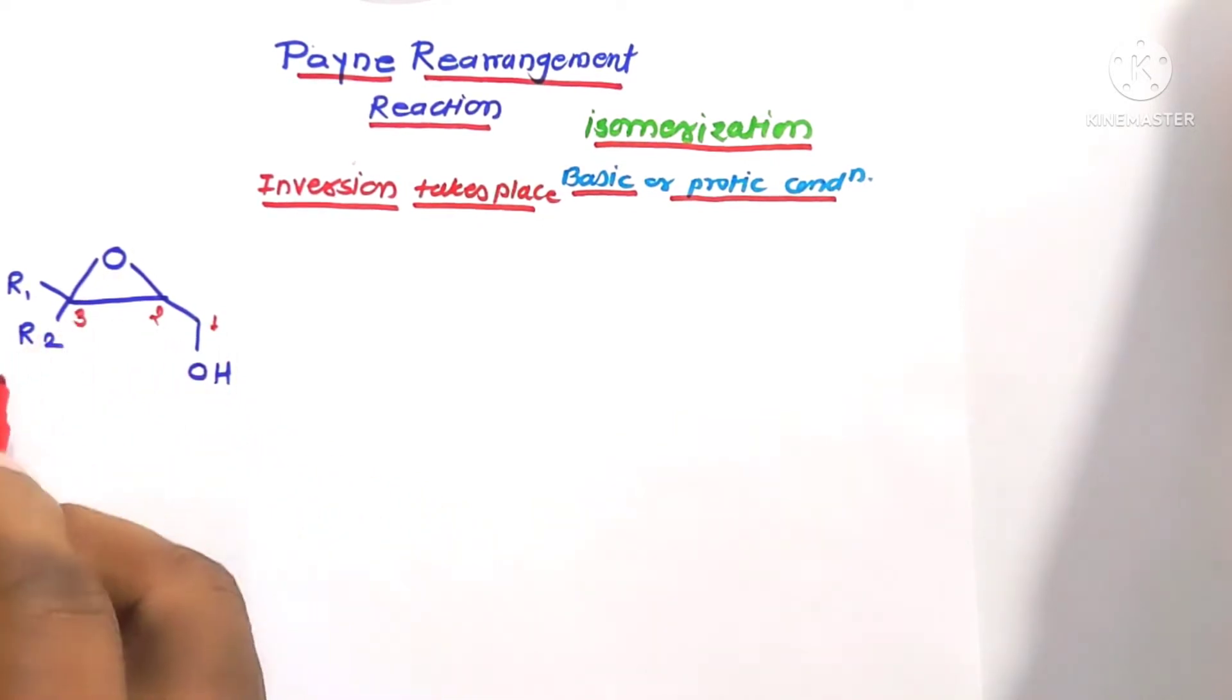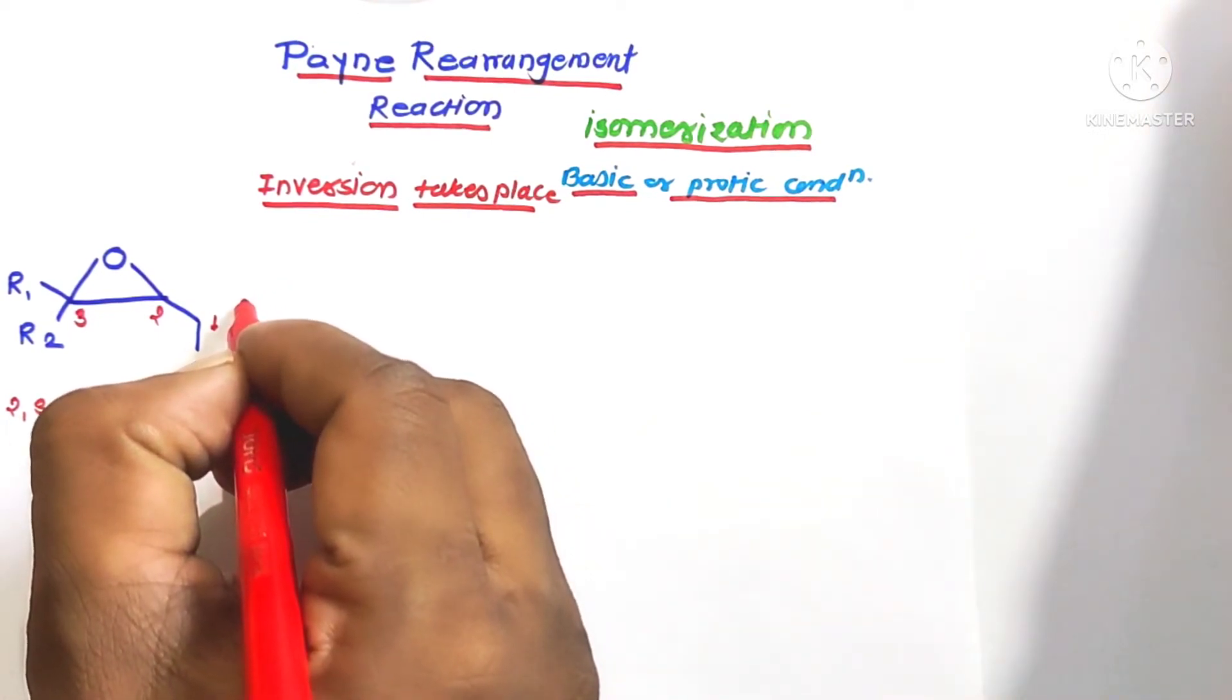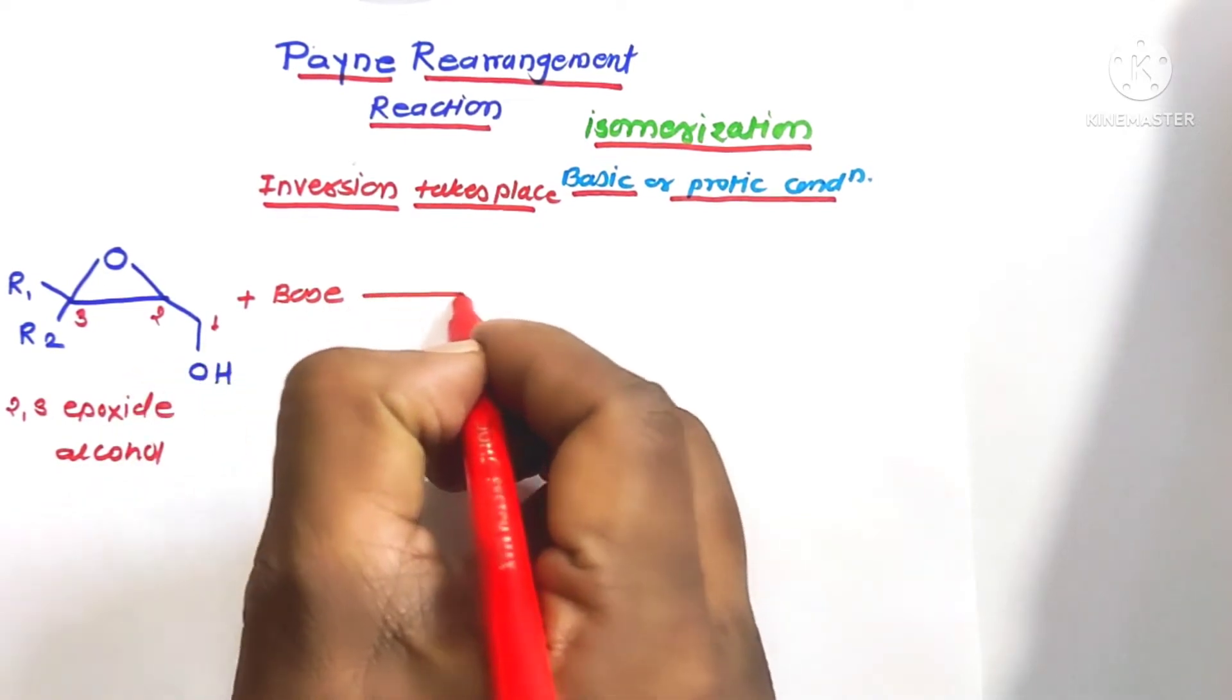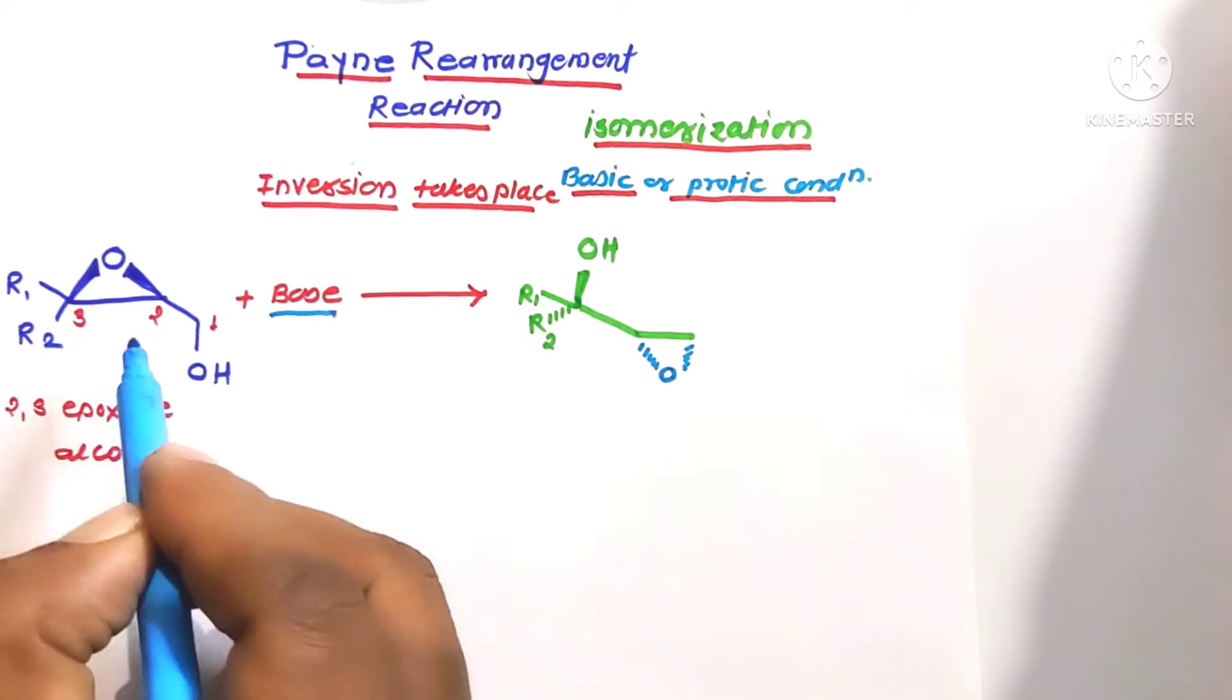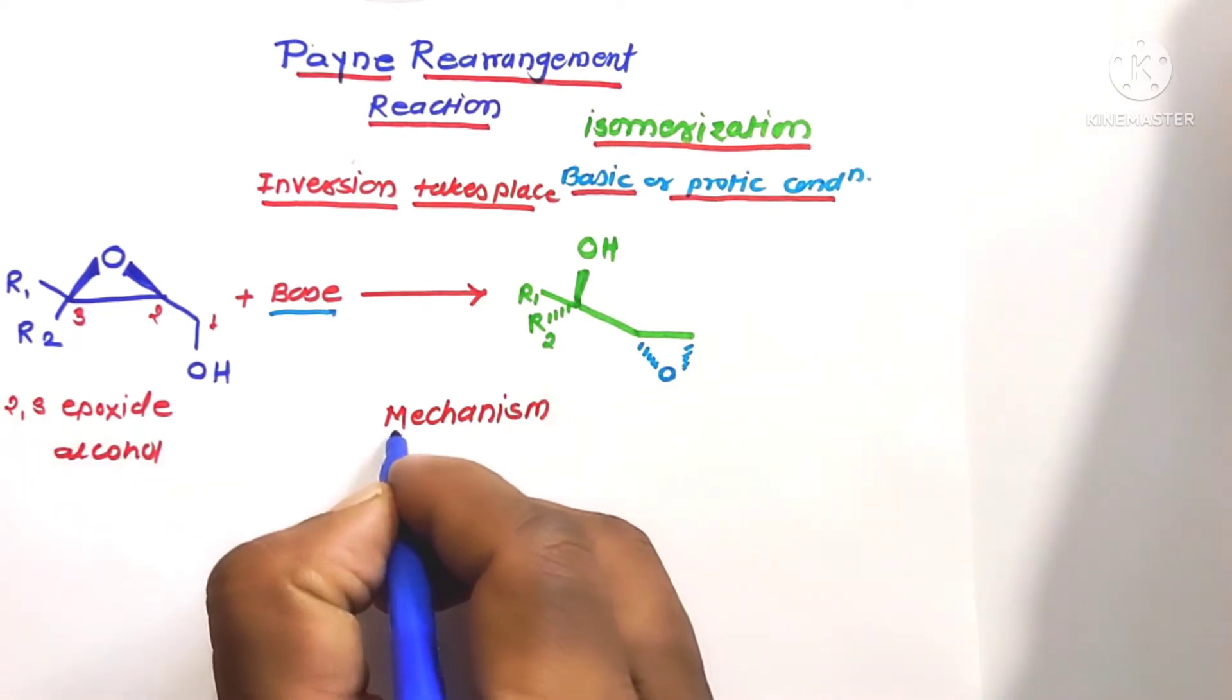2,3-epoxide alcohol is the main substrate of this reaction. This substrate is reacted in presence of basic condition to form the isomeric product of this substrate molecule. The stereochemistry of substrate as well as product molecules are different. Now we will discuss the mechanism of this reaction.